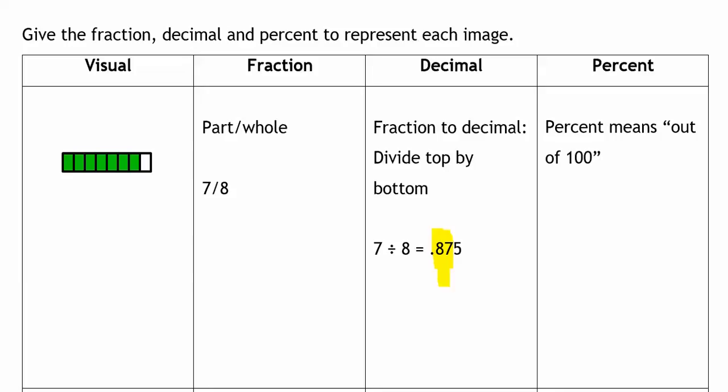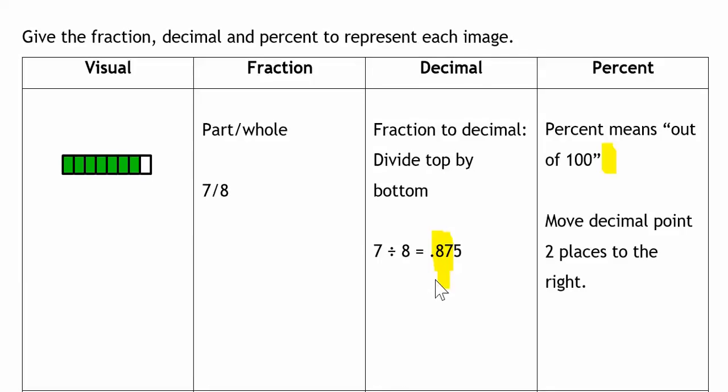The shortcut that people often remember is to change it from a decimal to a percentage. You move the decimal place two places to the right. So as we're moving two places to the right, go over one, go over two, that's where my decimal now goes. So my answer is 87.5%.